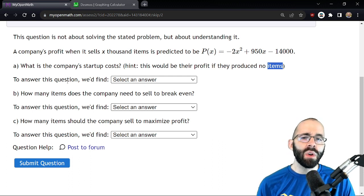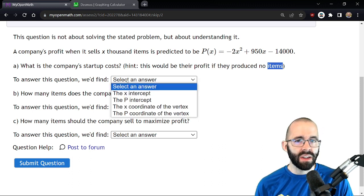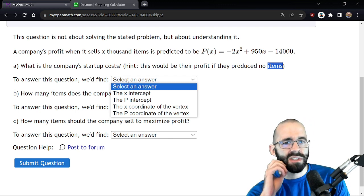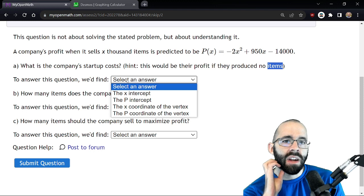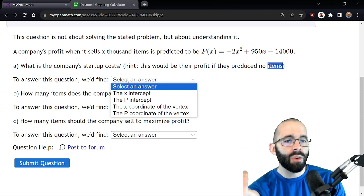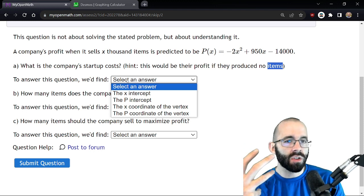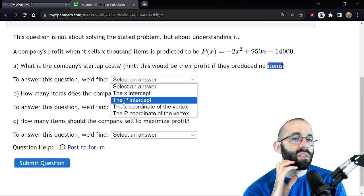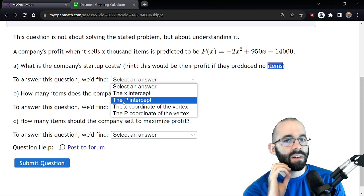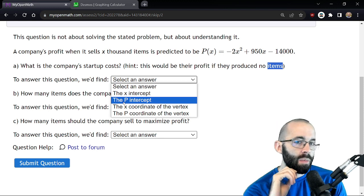But this wants you to say what quantity does that represent. What is that negative 14,000? It's the vertical intercept. When the input is zero, what's the output? We're looking for the vertical intercept. What's our vertical axis, P or x? It's P. P is our output, input is x, output is profit.